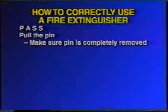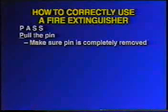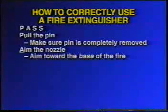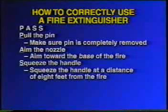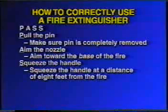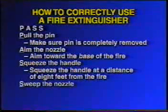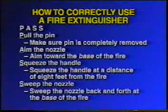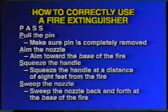Staff must also know how to correctly utilize a fire extinguisher. To correctly use a fire extinguisher, follow the PASS system. P: Pull the safety pin from the top of the fire extinguisher, making sure the pin is completely removed to allow the handle to depress and release the contents of the extinguisher. A: Aim the nozzle at the base of the fire. S: Squeeze the handle from a distance of approximately 8 feet from the fire. Remember, if you release the handle, the discharge from the extinguisher will stop. And finally, S: Sweep the nozzle back and forth at the base of the fire until the fire is extinguished or until help arrives. Watch an extinguished fire carefully, as fires may reignite.